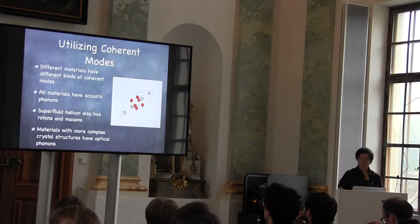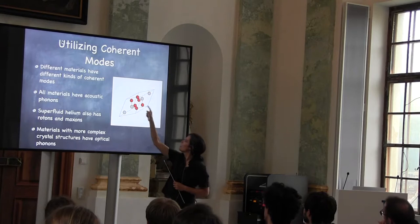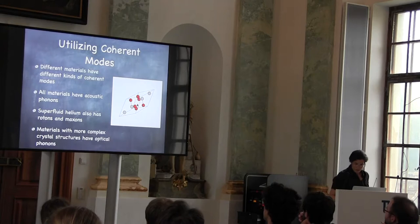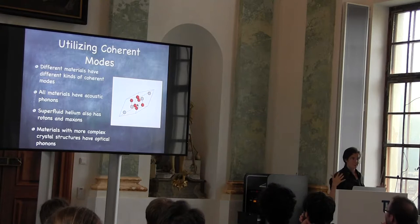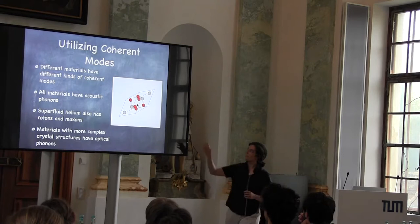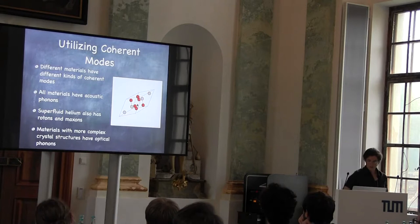Here's a visualization of sapphire (Al₂O₃) — these are the aluminum and oxygen atoms. In a unit cell there are 10 of these atoms, and so there are all sorts of modes that you can excite. Dark matter can come in and excite different oscillations in this material, and our job is to figure out what the amplitude of those oscillations is.